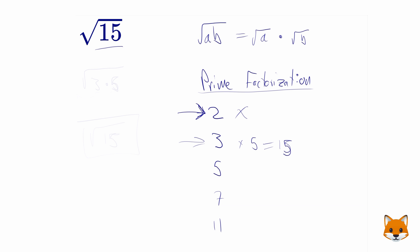So what does that mean? Well, that means that we can rewrite square root of 15 as the square root of 3 times 5.